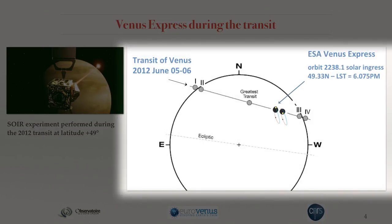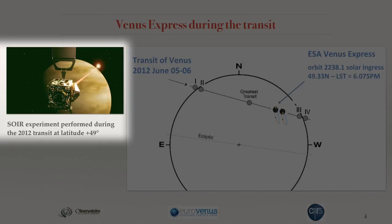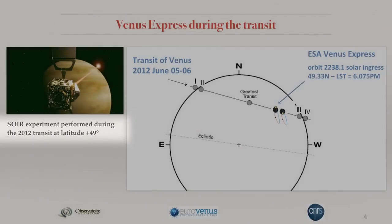During the transit in 2012, Venus Express was still active. This is to scale the orbit of Venus Express as projected onto the solar disk, and it was programmed to perform the SUAR experiment during the transit itself, providing us a useful reference at the latitude that in that case was 49 degrees north. What we did was first to compare some remote observations to what Venus Express observed during the transit.